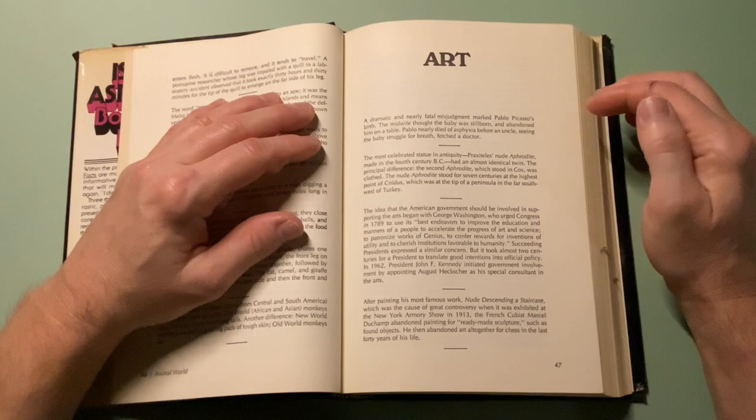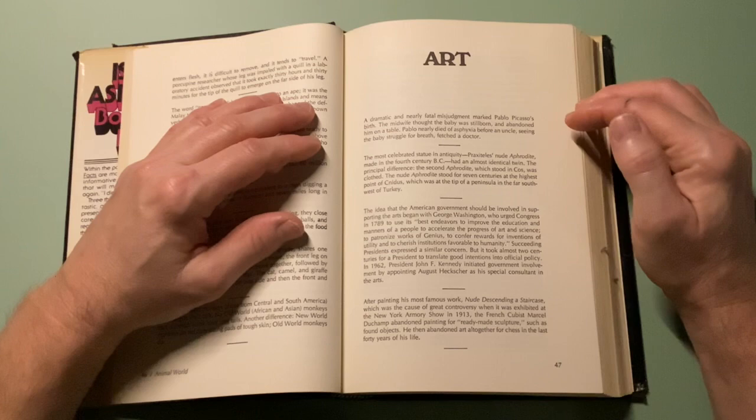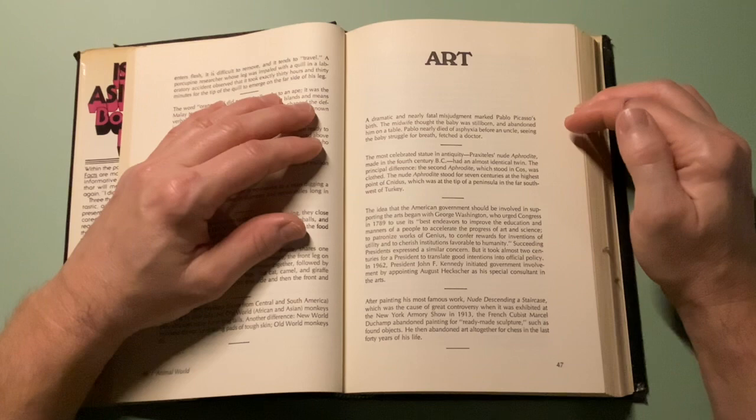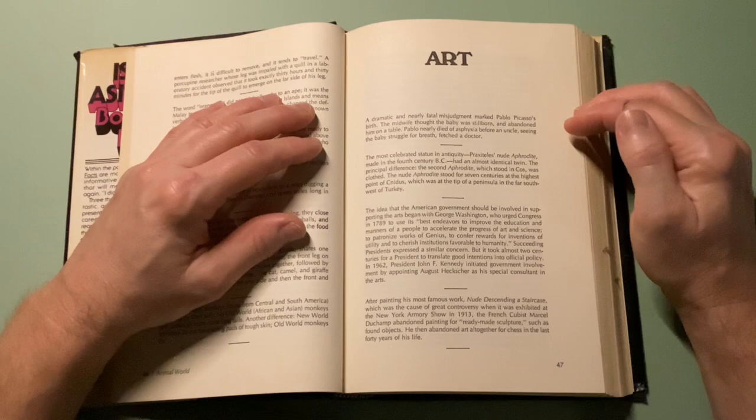A dramatic and nearly fatal misjudgment marked Pablo Picasso's birth. The midwife thought the baby was stillborn and abandoned him on a table. Pablo nearly died of asphyxia before an uncle, seeing the baby struggling for breath, fetched a doctor.